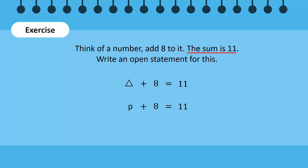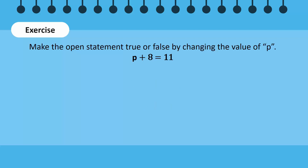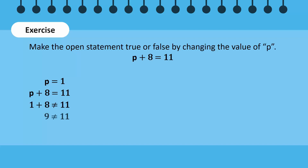p plus 8 is equal to 11. For this statement to be true, the left-hand side of the equation needs to be equal to the right-hand side. Let's replace p with 1: 1 plus 8 is equal to 11. The left-hand side adds up to 9, while the right-hand side is 11. So this statement is false.